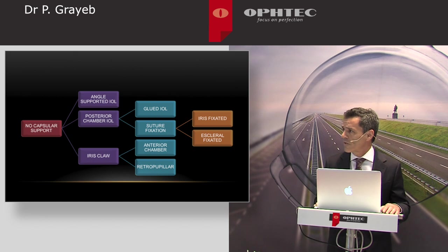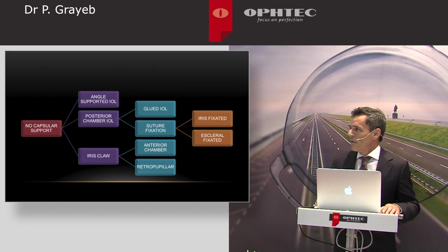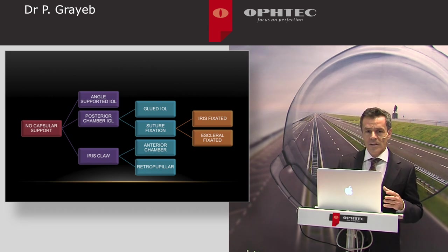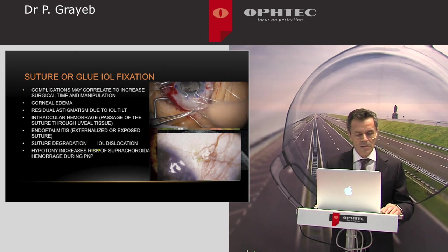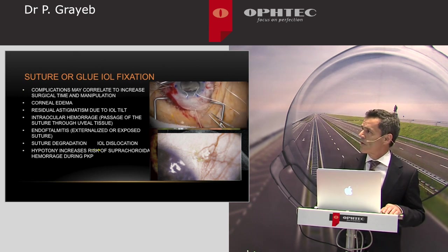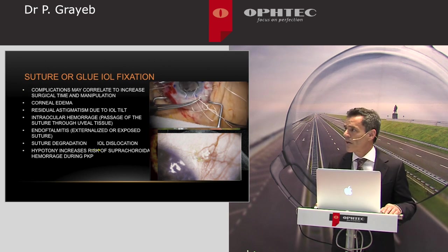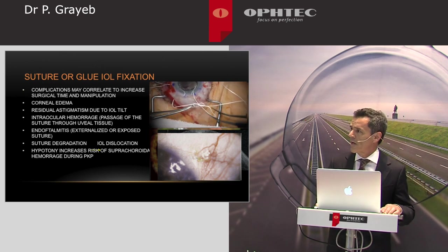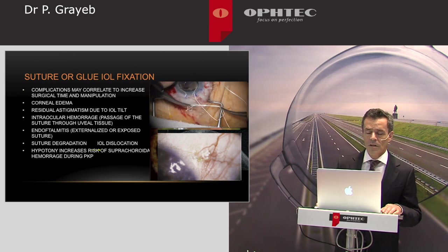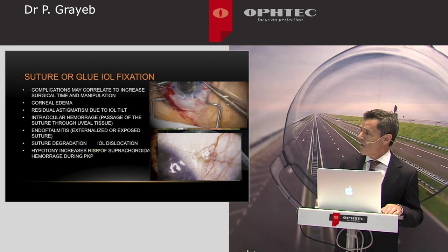Additional options include the implantation of a posterior chamber lens, secured to the iris or to the sclera by means of sutures or glue. But these techniques are complicated, require much manipulation, extensive operation time, and can lead to mild to severe complications like secondary astigmatism that are very difficult to correct, as it depends on the IOL tilt.